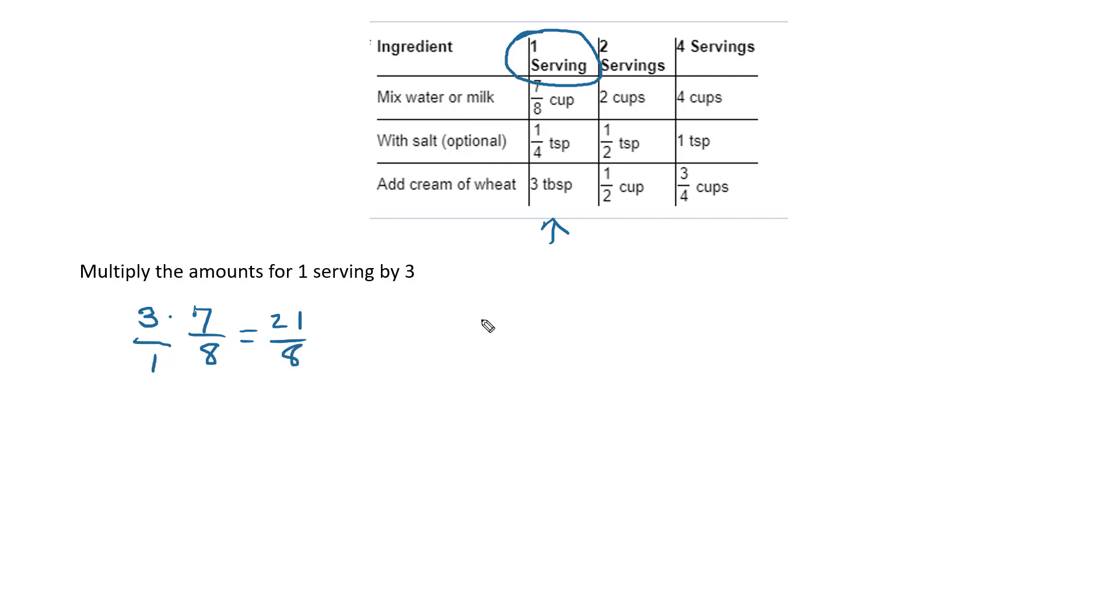All right, do the same thing with salt. So 3 over 1 times 1 fourth. So that'll be 3 fourths. And then finally, the last one in tablespoons, 3 times 3, 9 tablespoons. So that's not too bad.